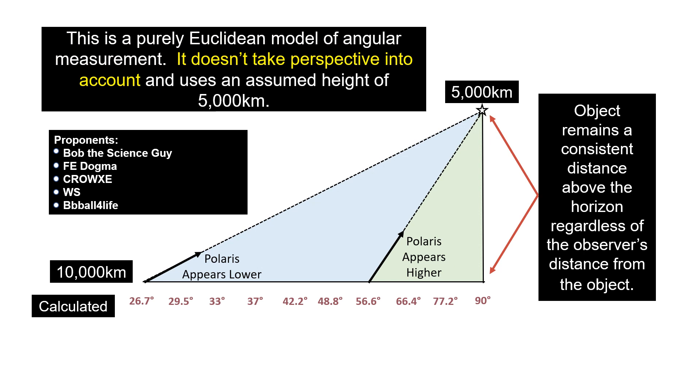'It doesn't take perspective into account.' Well, that is incorrect because perspective is dealing with how big an object appears to be or its angular size. Or in this case, it would be how high does Polaris appear to be in the sky from different locations.